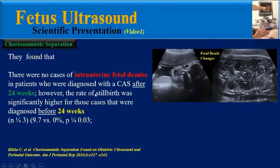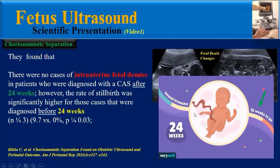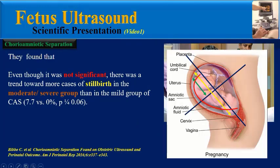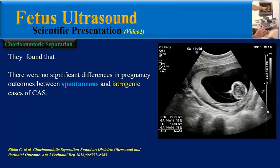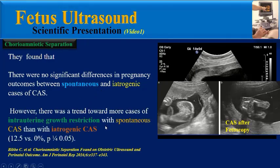There were no cases of intrauterine fetal demise in patients diagnosed with CAS after 24 weeks. However, the rate of stillbirth was significantly higher for cases diagnosed before 24 weeks. Even though it was not statistically significant, there was a trend toward more stillbirths in the moderate-to-severe group compared to the mild group.